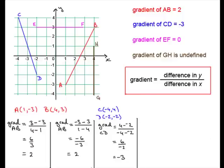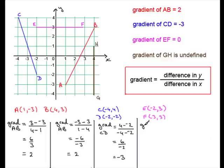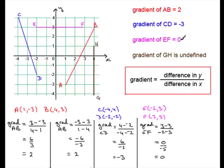Now let's move on and have a look at EF. We observed that the gradient was 0, but does it check out with the formula? E has coordinates (−2, 3) and F has coordinates (3, 3). So the gradient of EF equals the difference in the y coordinates: 3 minus 3, all divided by the difference in the x coordinates: −2 minus 3. Now 3 minus 3 is 0, divided by −5. Zero divided by −5 is 0, so that agrees with the observed value.